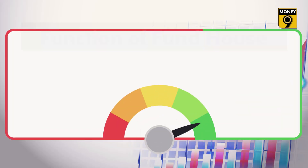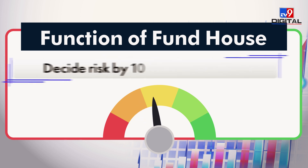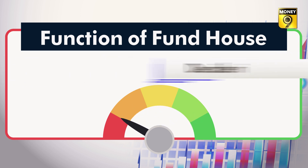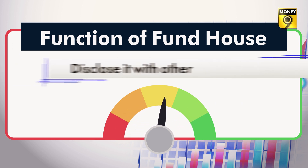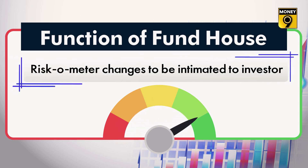SEBI evaluates the riskometer of all fund houses on a monthly basis. Fund houses have until the 10th of every month to determine the risk level of their funds and publish the same along with other portfolio disclosures. In addition, any changes made to the riskometer must be promptly communicated to mutual fund unit holders by means of newspaper ads, SMS, and emails.